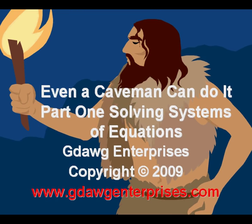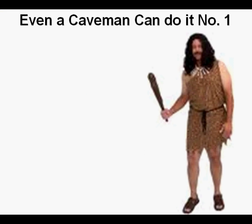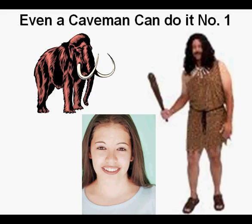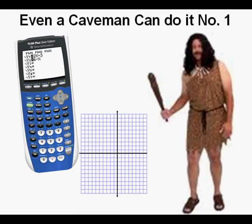Even a caveman can do it — part one: solving systems of equations. Meet our friend the caveman Og. He feels a little out of place in the 21st century. We want to help him get with it — get out of the cave and maybe find a 21st century girlfriend. He's getting tired of eating rotten mastodon meat, but for that he needs a job. Fortunately, he's learned some algebra and can solve systems of equations by graphing, which we'll verify with a graphing calculator.